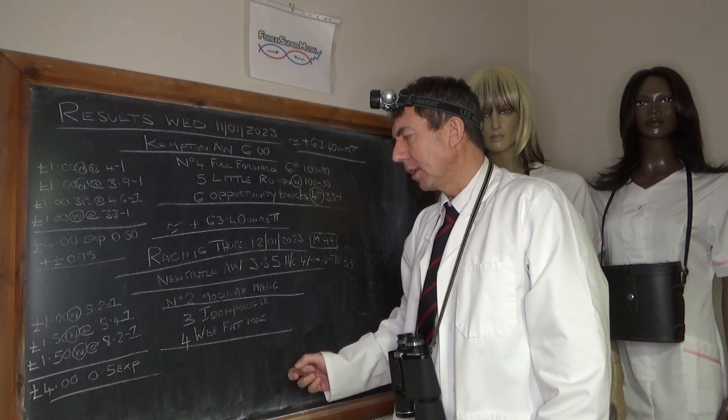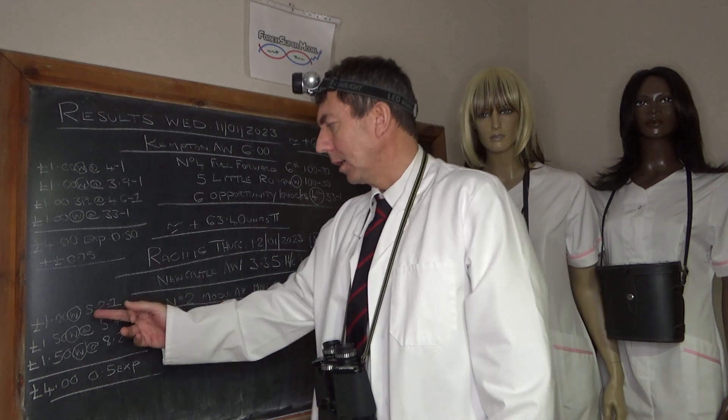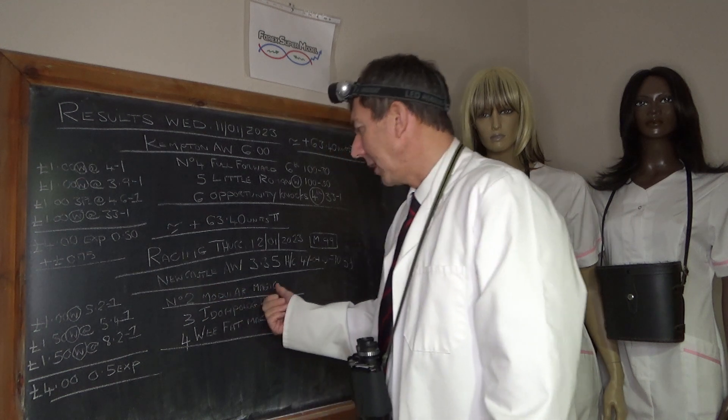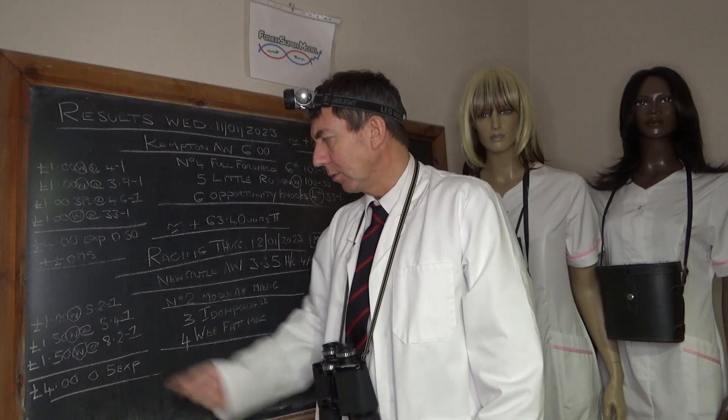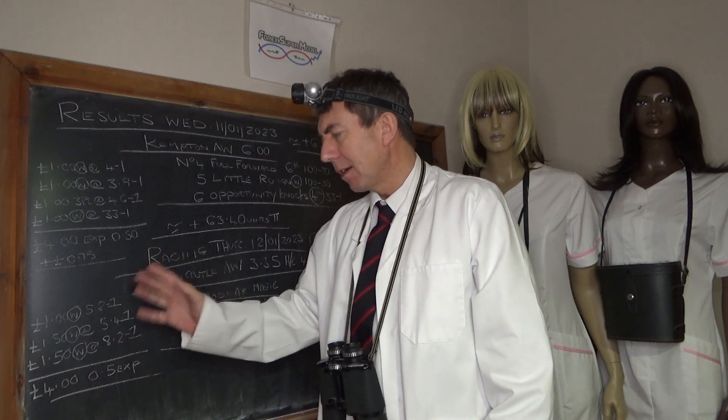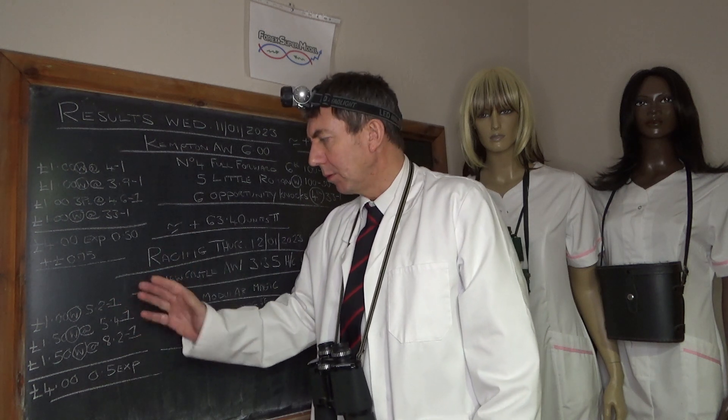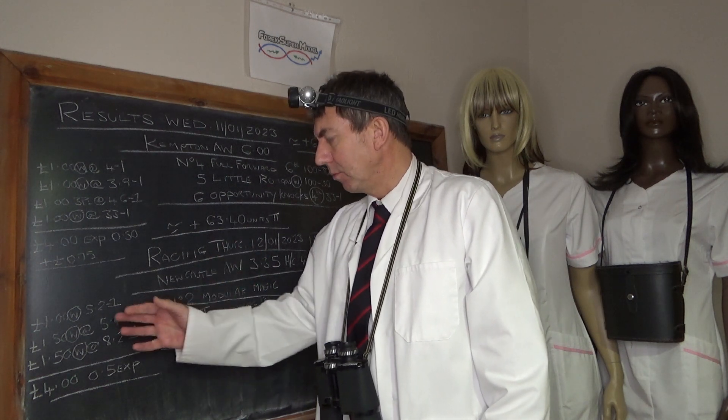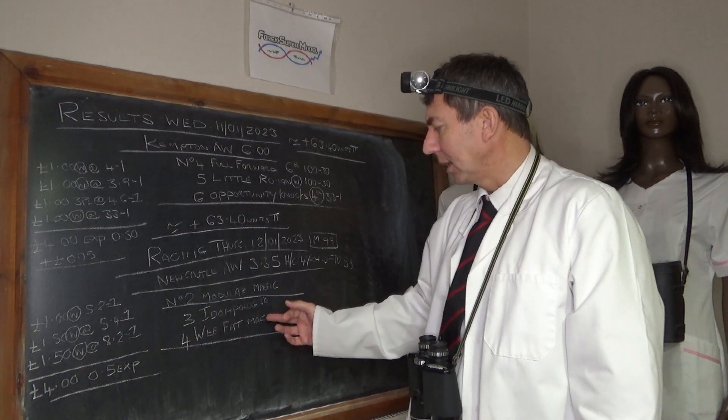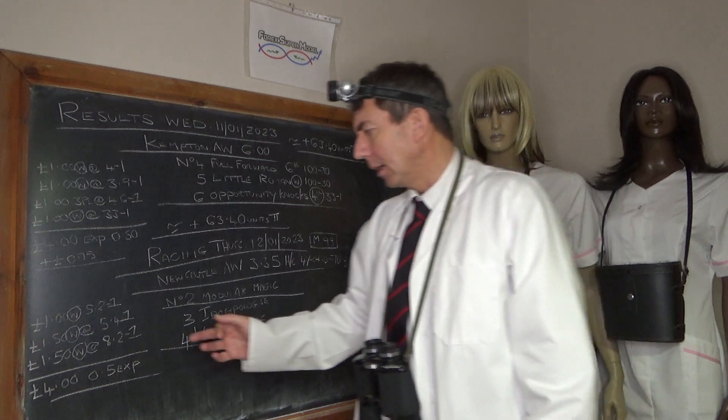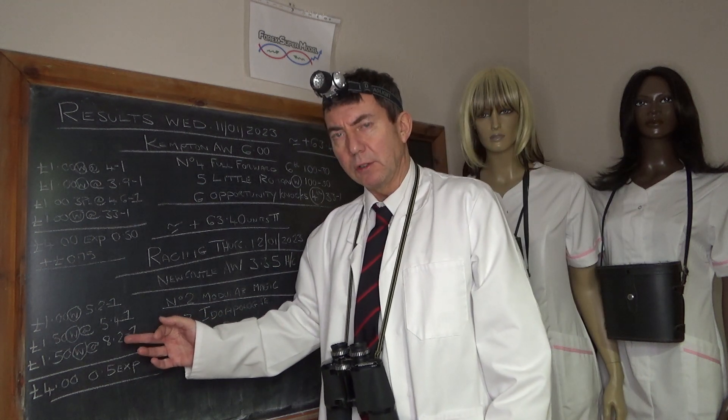So what we've done is we've done a pound per eight pound unit on Modular Magic at 5.2 to one, so that's a hundred pound win on 5.2 so we'll make a minor profit if that comes in. But we've assumed that it's just going to not quite get there and one of these two as we said, I Do Apologise or WeFat Mac, will come and just steal it off him at the line.